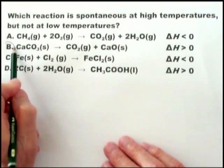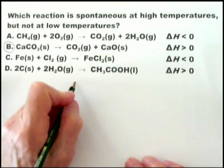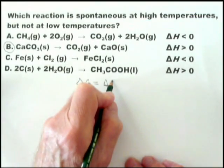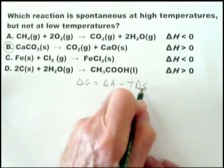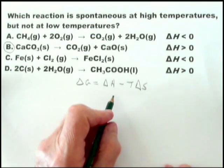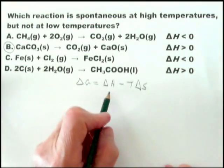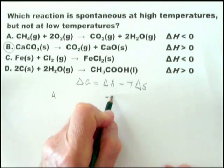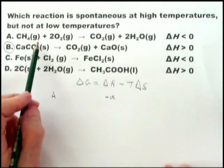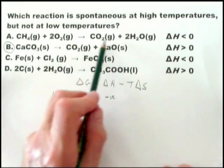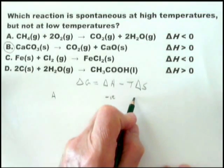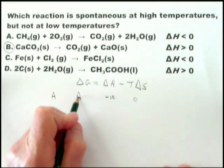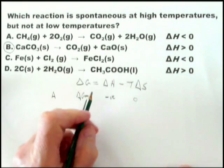If you're not quite clear about the chemistry, you can go to the equation: delta G equals delta H minus T delta S. They tell you what delta H is. For option A, delta H is negative, and delta S is zero — there are three molecules of gas on each side. So delta G is always negative, meaning always spontaneous.